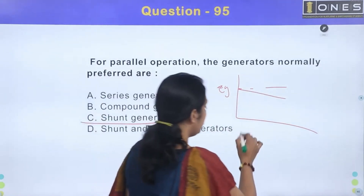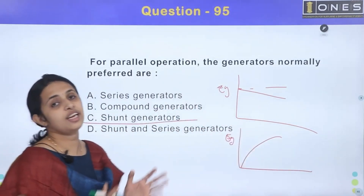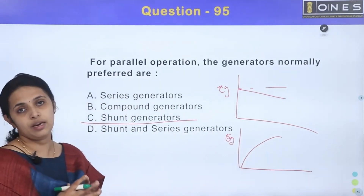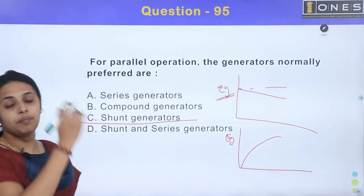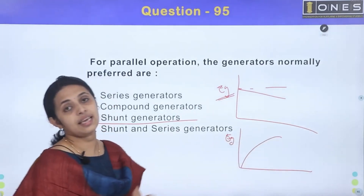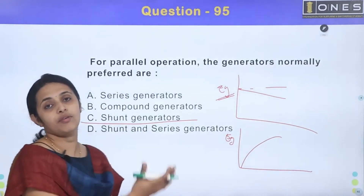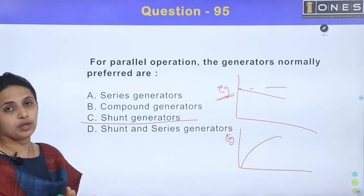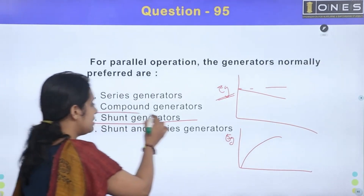It is easy to use. But if we have to select a series generator, this is what is called rising characteristics. We can use a series generator in parallel operation, but for parallel operation we prefer drooping characteristics. The shunt generator uses drooping characteristics. So here is the appropriate answer: option C — shunt generator.